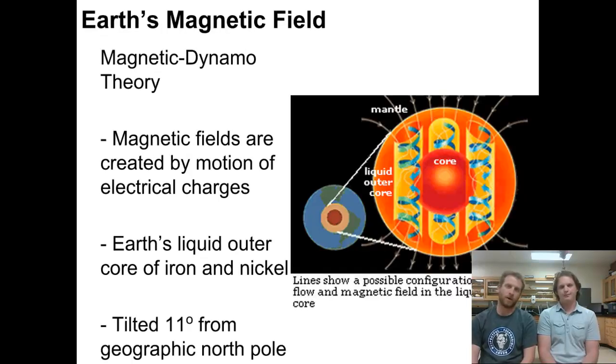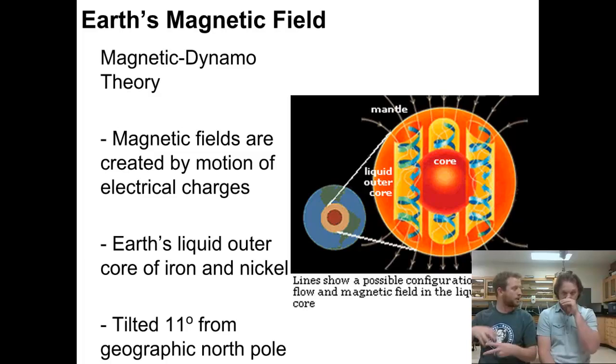All right, so first part, we're talking about Earth's magnetic field. And remember from the last slide, we talked a little bit about the outer core and the inner core. So the outer core was that liquid iron, nickel, sulfur moving around, and the inner core is solid. One of the things that helps generate on the Earth is the magnetic field.